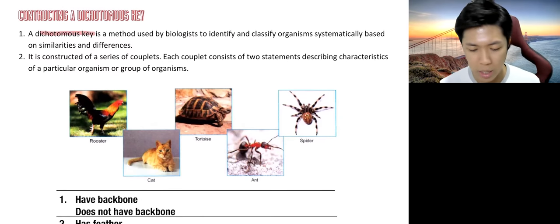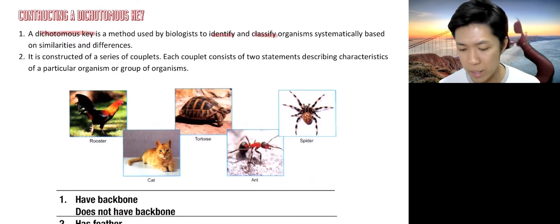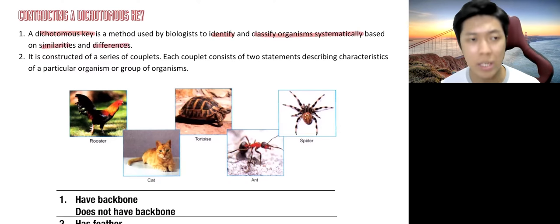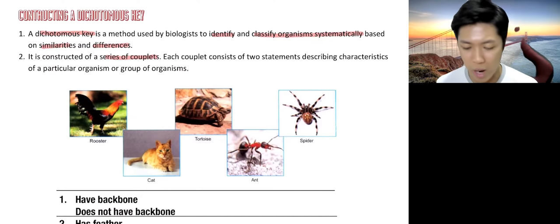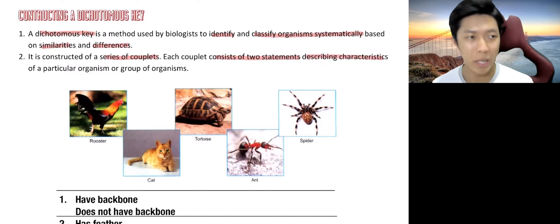Dichotomous key is used by biologists to identify and classify organisms systematically based on their similarities and differences. It's a series of couplets, means we will have a pair of questions that you will ask, consists of two statements describing characteristics of the particular organisms or a group of organisms.